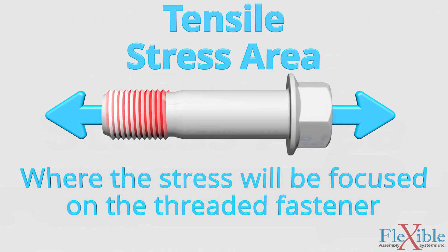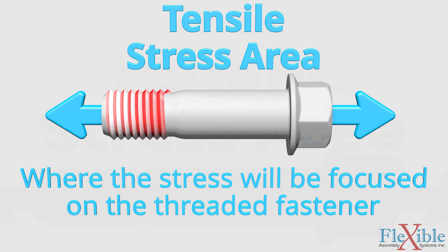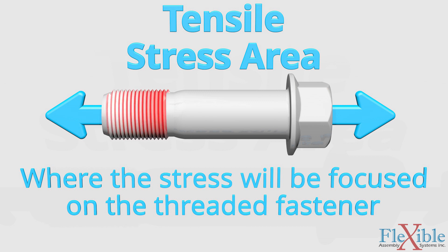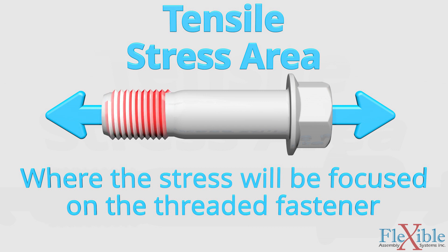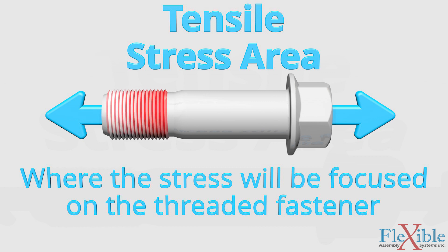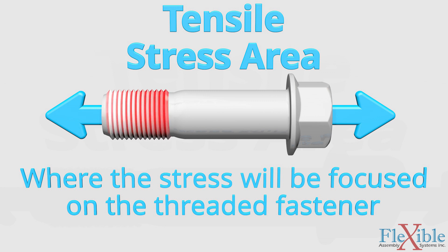The tensile stress area for a threaded fastener is the weakest point of the bolt. It is calculated using the nominal bolt diameter, the amount of engaged threads, and their pitch. It is measured in millimeters squared or inches squared. The finer the thread, the larger the stress area becomes.